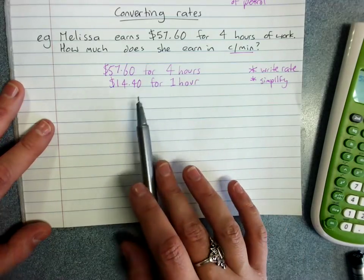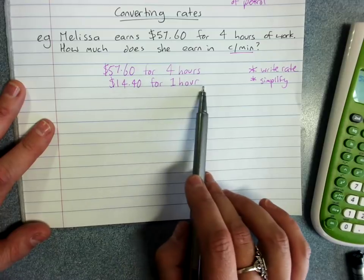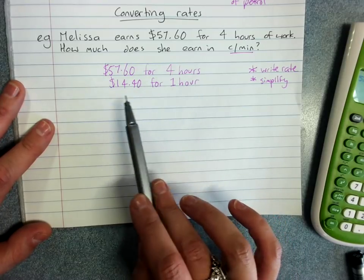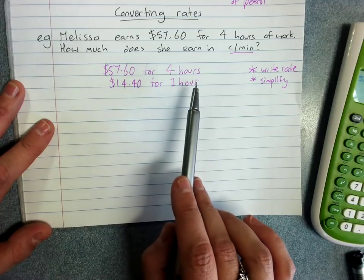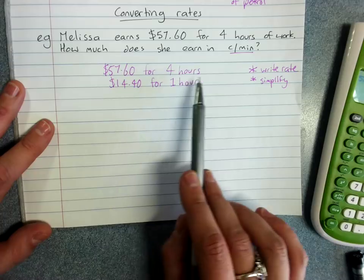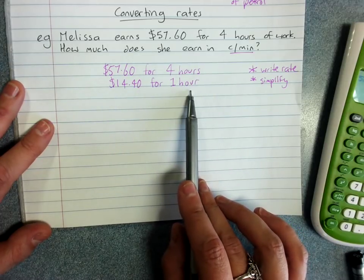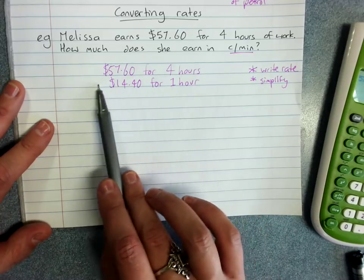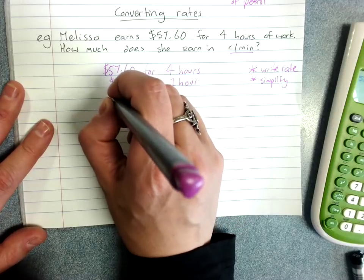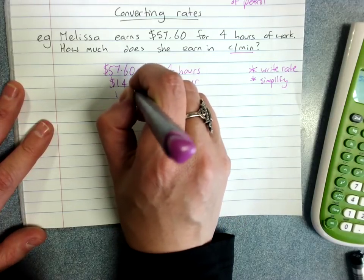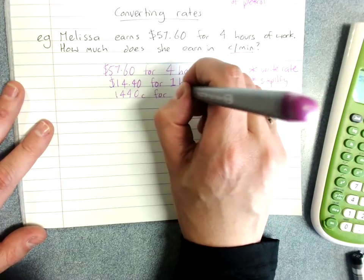Now I could write it as $14.40 per hour, but we might keep it like this for a moment. Because this will be easier because I've got to convert each one. One to cents and two minutes. So $14.40 in the cents, sorry about the bell there, one four four zero cents for one hour is 60 minutes.